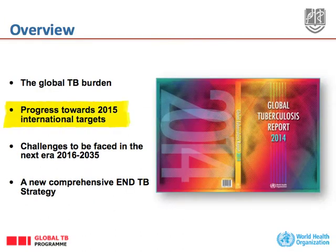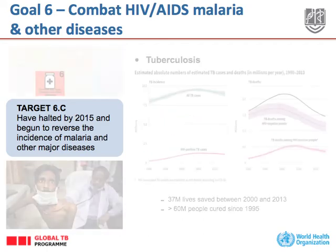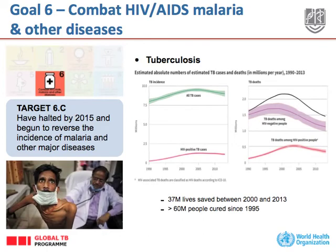We move now to the progress towards the 2015 international targets. This shows the target as written in the Millennium Development Goals — Target 6C: to have halted by 2015 and begun to reverse the incidence of malaria and other major diseases, the other indicator being tuberculosis. Both incidence on the left and deaths on the right have been coming down now for quite a few years.